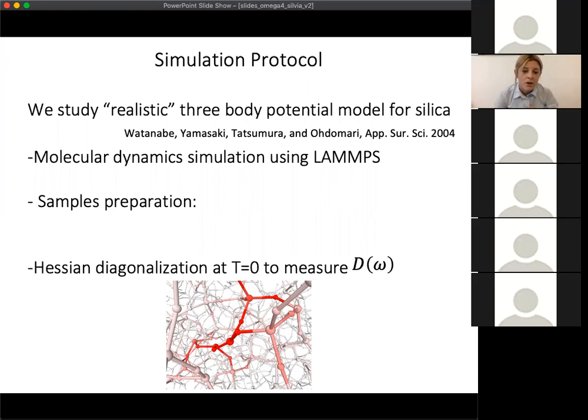We perform molecular dynamics simulation using LAMMPS. We start by putting randomly positioned atoms of silicon and oxygen in a cubic box. Then we perform Newtonian dynamics, heat up the system up to 4000 Kelvin, then quench down again to zero Kelvin, and we produce many configurations and we minimize them energetically using the FIRE scheme.